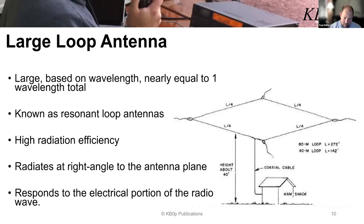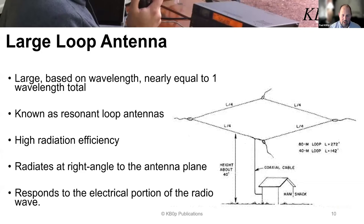If you can imagine this loop hovering flat above your house, the plane of the antenna is flat. When I say the loop radiates at 90 degrees, it's radiating straight up — at right angles to the antenna plane. So this loop antenna, for example, would be radiating straight up, kind of like looking through a magnifying glass — the direction you're looking through is the direction the signal is going.